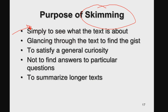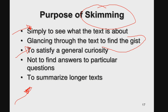You glance through the text to find the gist. When you want to have a gist of the whole text, you just glance through it by skimming to satisfy a general curiosity — especially when you are too curious but short of time. You do this while doing a comprehension to have a general idea about the theme of the text, not to find answers to particular questions. To summarize a longer text into a shorter version, you use the technique of skimming.